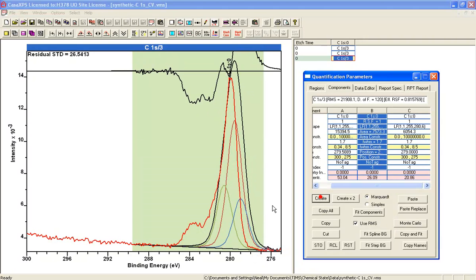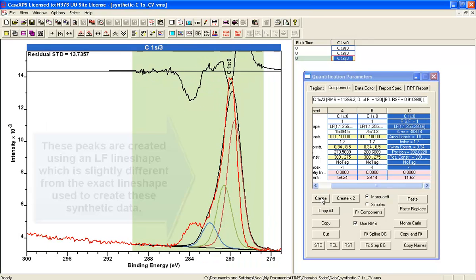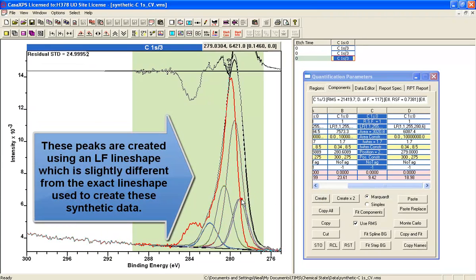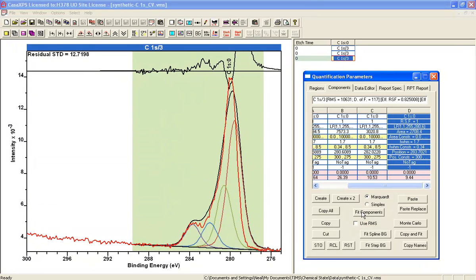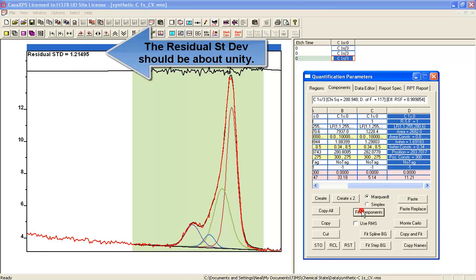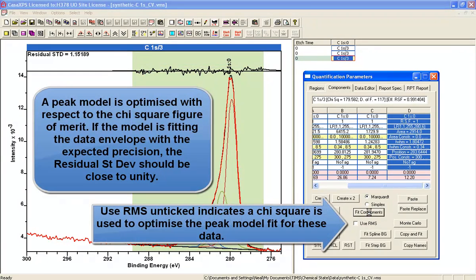In the first instance, the line shape is not quite the same as the one used to create the data. So we have a slight perturbation to the system based on the line shape. So now if we fit this, we obtain a chi-square. And because the line shape isn't exactly the one that was used, we don't get exactly a residual standard deviation of unity.